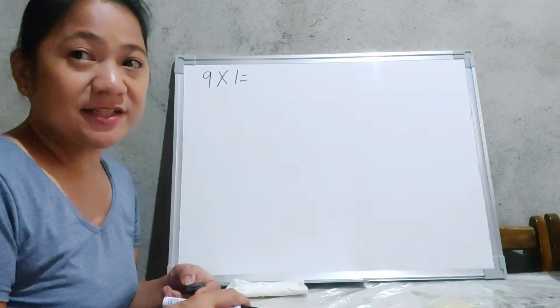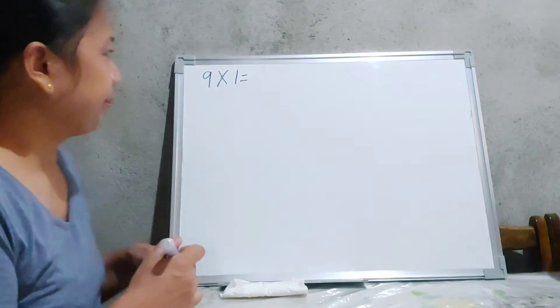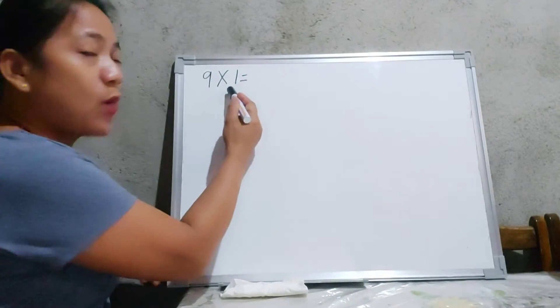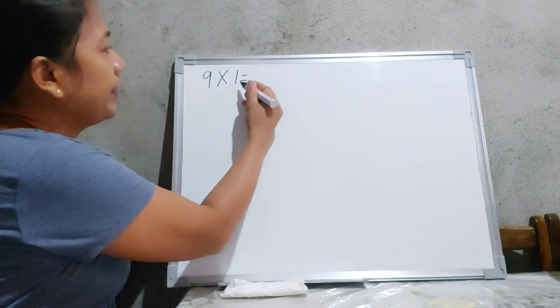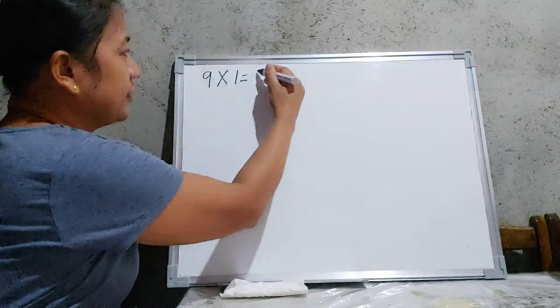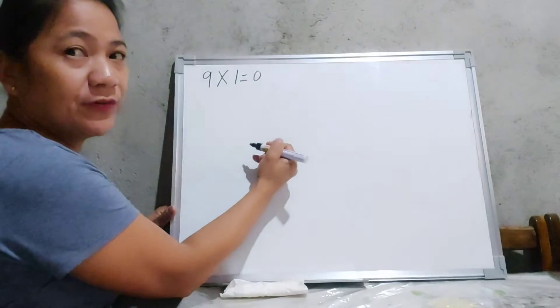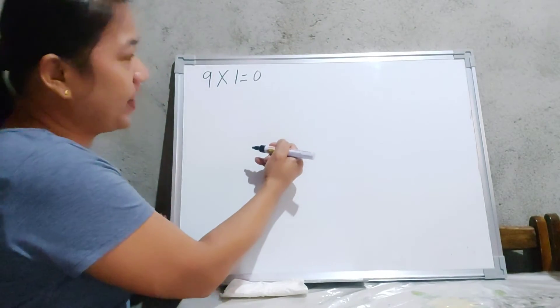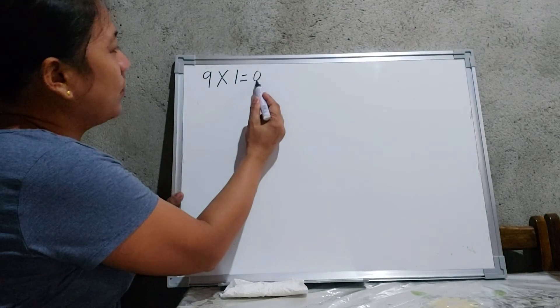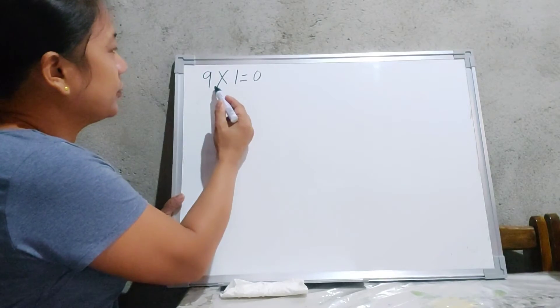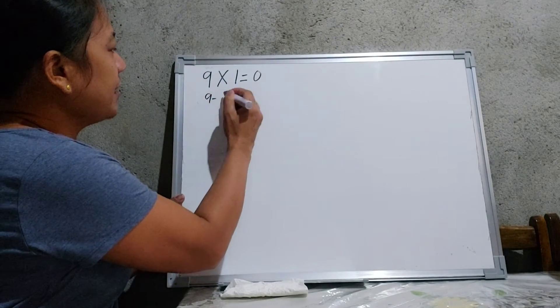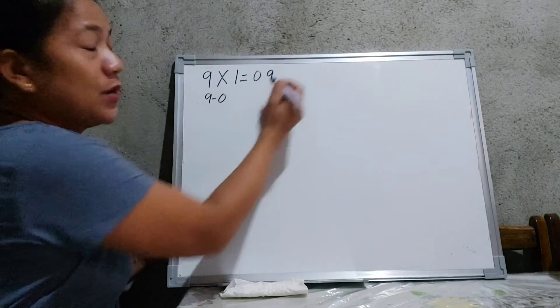So let us do it from the top. 9 times 1. Number that comes before 1 is 0. I will write 0 as the first digit of my answer. And I will subtract 0 to 9. 9 minus 0 is equal to 9.